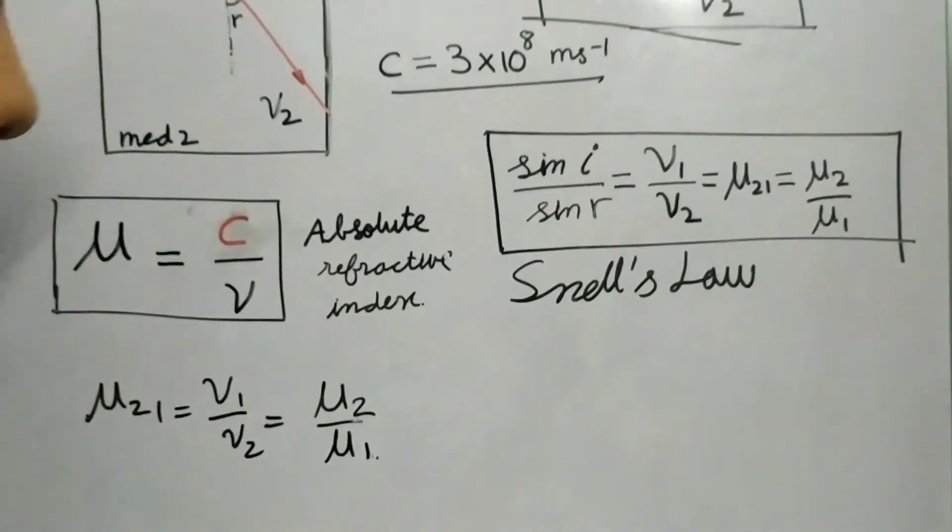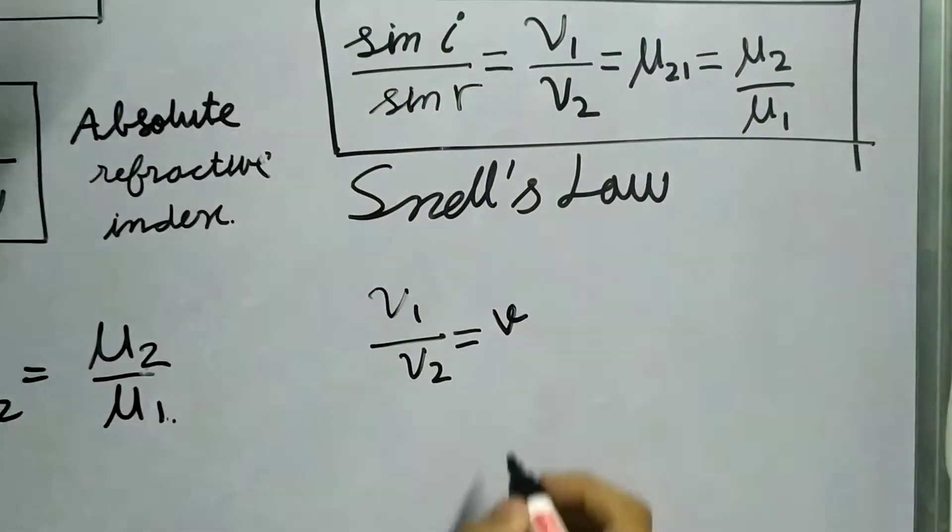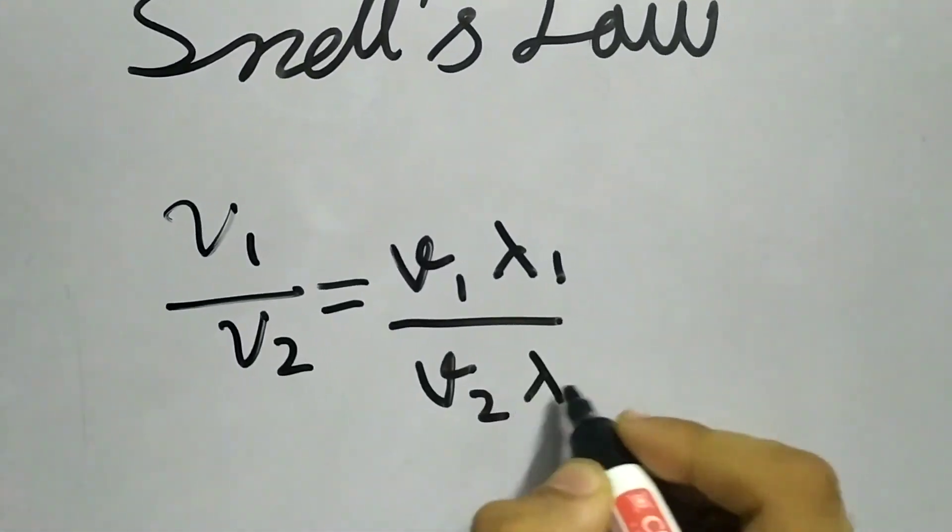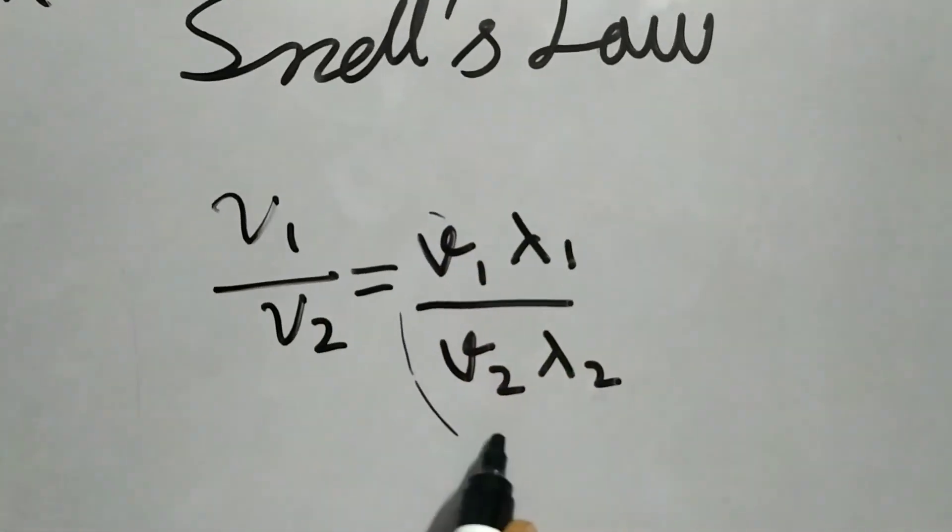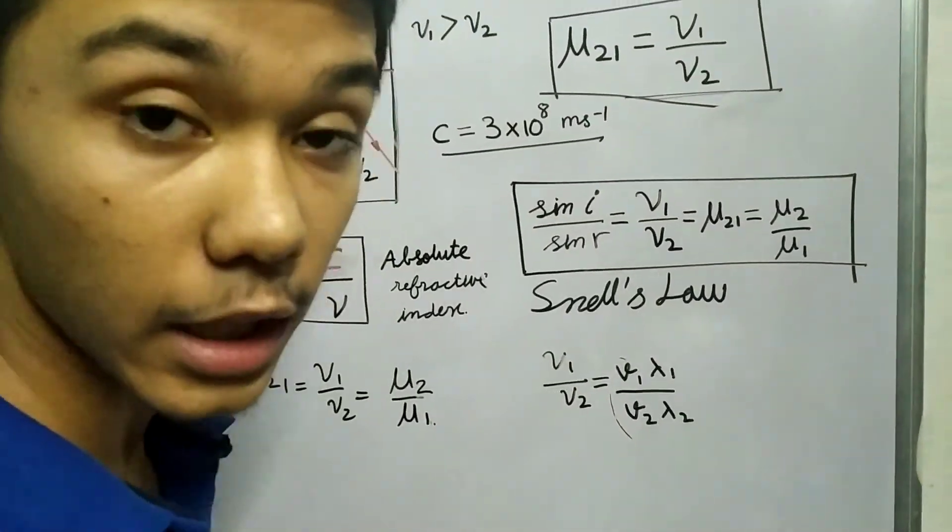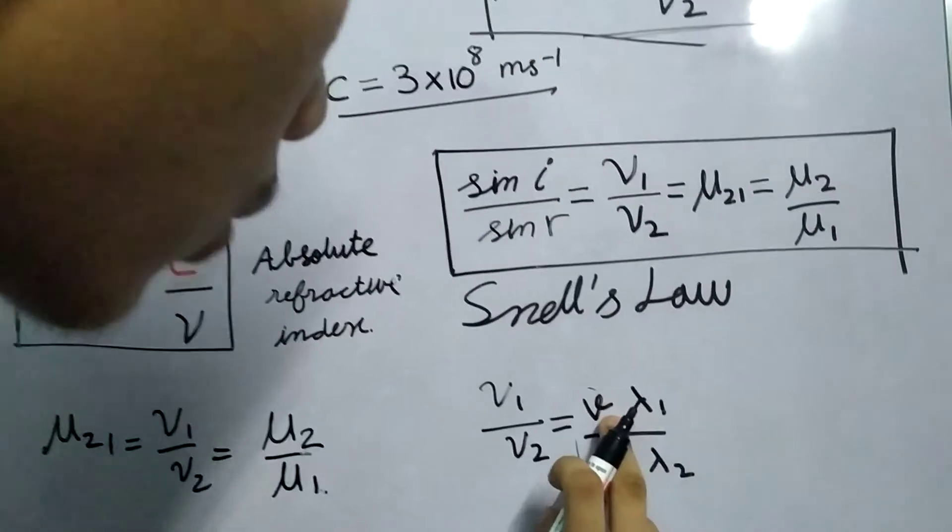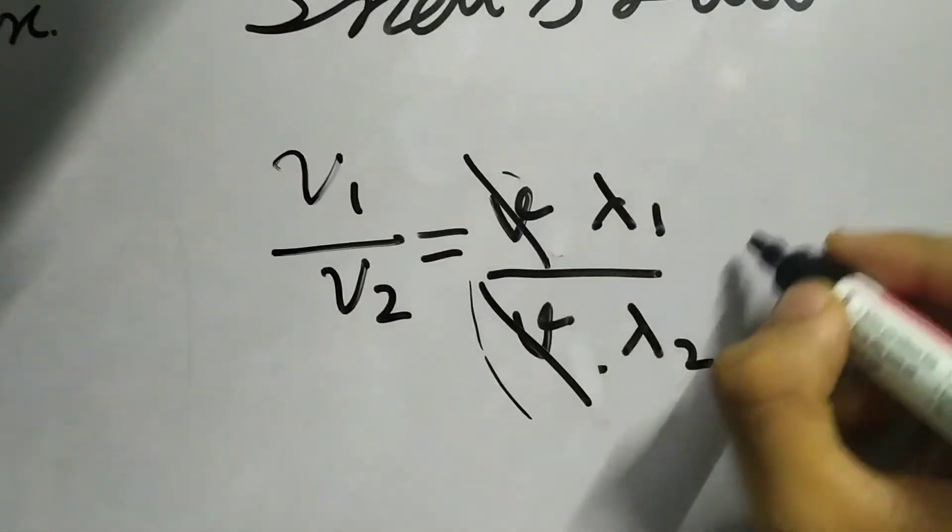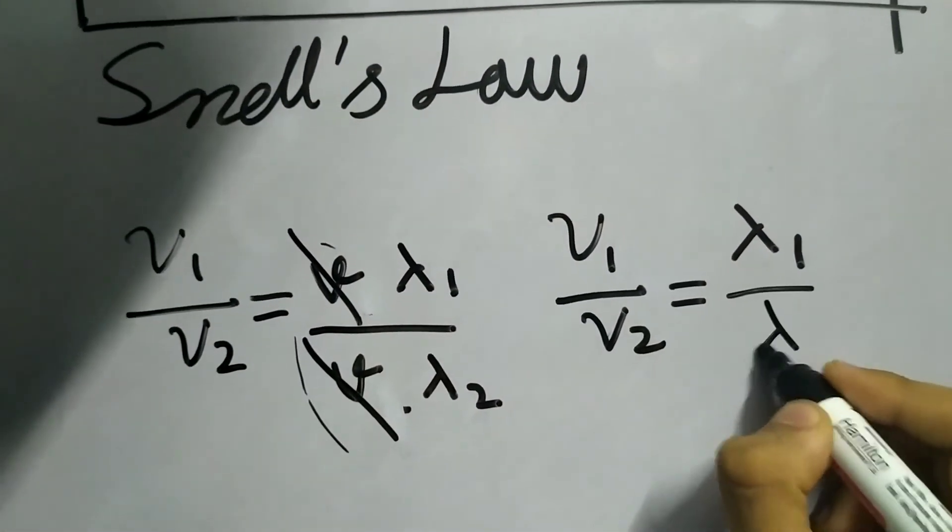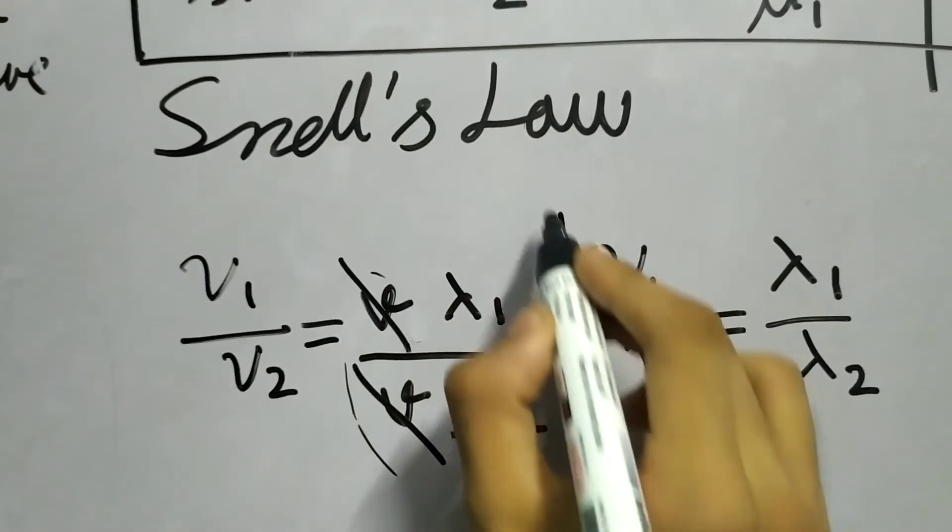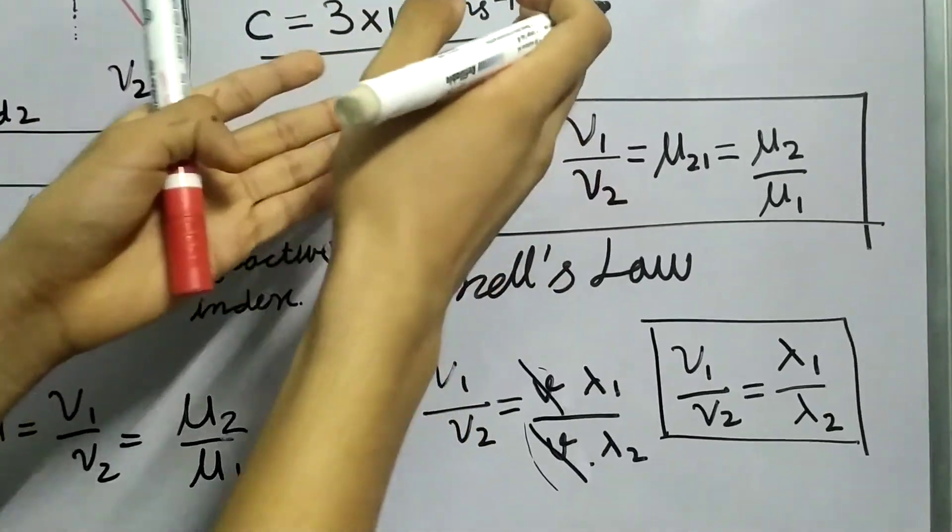Another important thing I want you to notice. If you take the ratio v1 by v2, this will be frequency ν1 times λ1 divided by ν2 times λ2. But here's the catch: the frequency of light in a medium is independent of the medium. It only depends on the frequency ν. So these two beautifully cancel out. We get v1 by v2 as λ1 divided by λ2, and of course this equals μ2 by μ1, and then you can also equate to sin i by sin r.